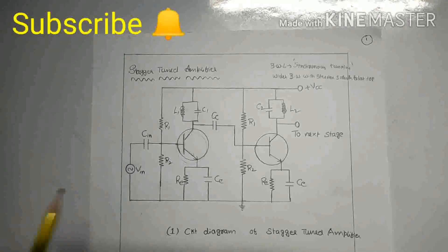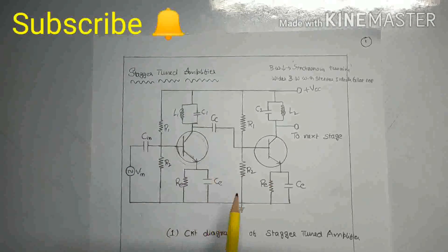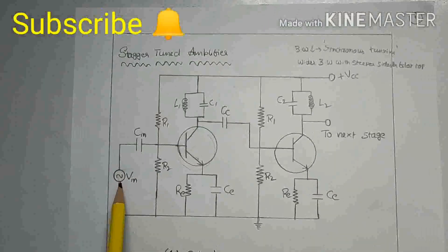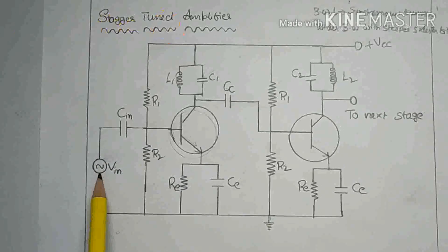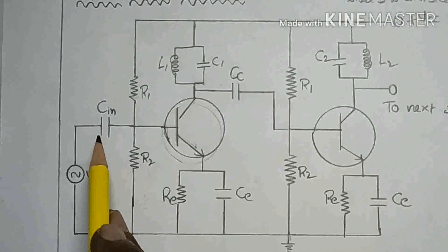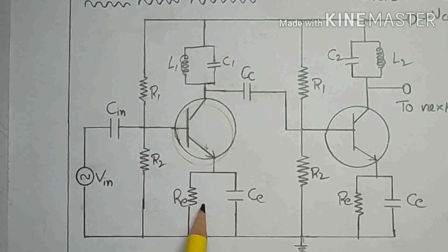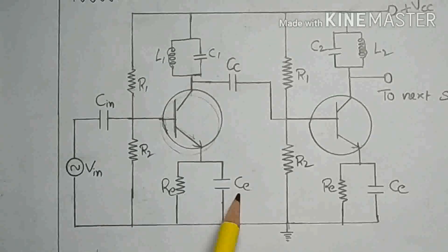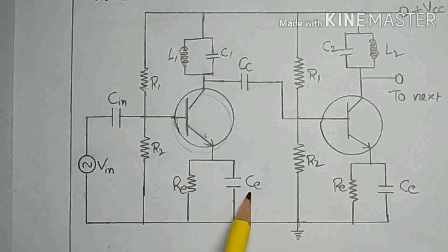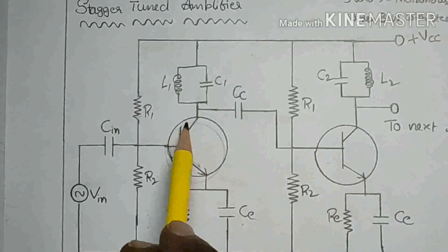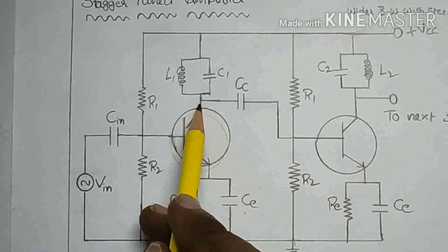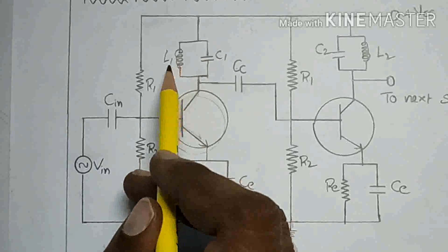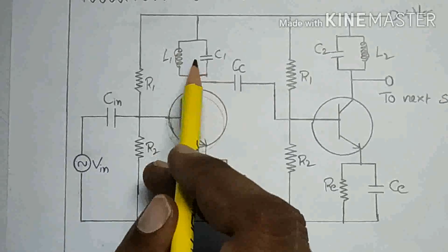Stagger-tuned amplifier. The circuit diagram of a stagger-tuned amplifier consists of VIN, that is the input voltage, and CIN is a bypass capacitor. R1, R2, and RE provide proper biasing and stabilization, and CE is a blocking capacitor. It blocks the DC and allows the AC signal. The output of the first stage is collected across the collector, which consists of a tank circuit L1, C1 — also called a tuned circuit.